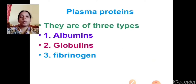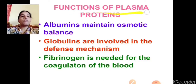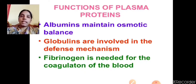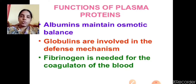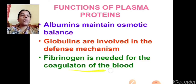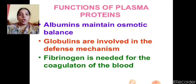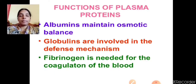The proteins present in plasma are called plasma proteins, and they are of three types: albumins, globulins, and fibrinogens. Albumin mainly involves maintenance of osmotic balance. Globulins are involved in the defense mechanism — they fight against unwanted pathogens. Fibrinogen is needed for the coagulation of blood, also called clotting of blood.